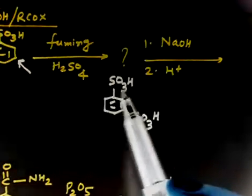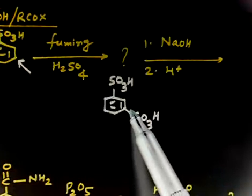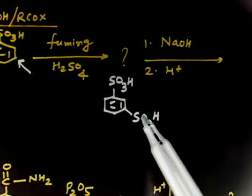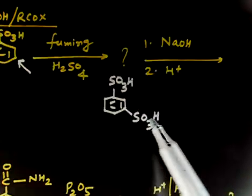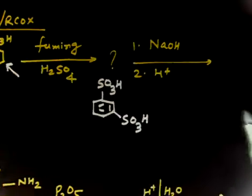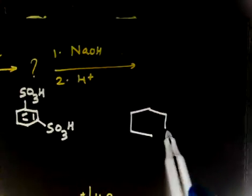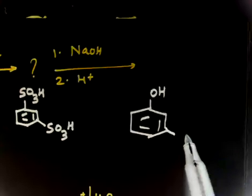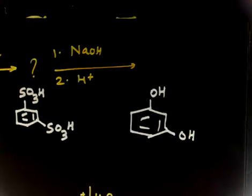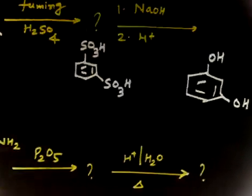In the next step, SO3H becomes a good leaving group. OH minus will attack and this goes. Again, this SO3H can be replaced by OH. Finally, after acidification, initially you will have O minus, and if you do acidification you will have OH. So the final product we have benzene that contains two OH groups, one is at meta position.